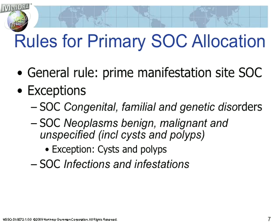However, there are exceptions to this general rule for three types of terms. Firstly, terms for congenital and hereditary anomalies are assigned to SOC congenital, familial and genetic disorders as the primary SOC. Terms for benign and malignant neoplasms are assigned to SOC neoplasms benign, malignant and unspecified, including cysts and polyps, as the primary SOC. However, in an exception to the exception to the rule, this does not apply to cyst and polyp terms — these terms have as their primary SOC assignment their site of manifestation SOC. Finally, terms for infections are assigned to SOC infections and infestations as the primary SOC. These primary SOC assignment rules were instituted as MedDRA was being developed in order to aggregate certain critical issues — namely congenital anomalies, neoplasms and infections — into specific places in MedDRA to facilitate safety signal detection. For detailed information on the primary SOC allocation rules, please refer to the MedDRA introductory guide.